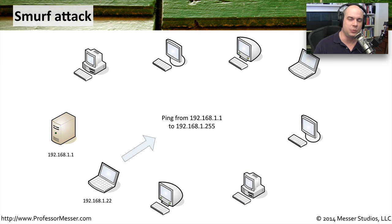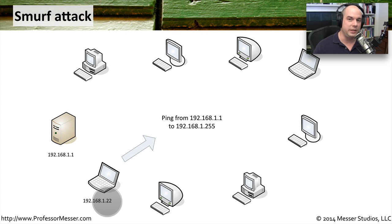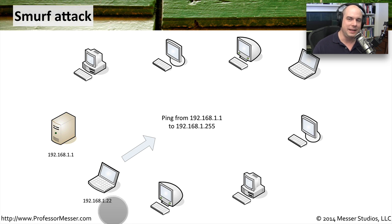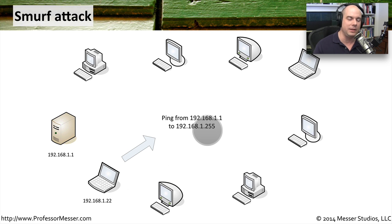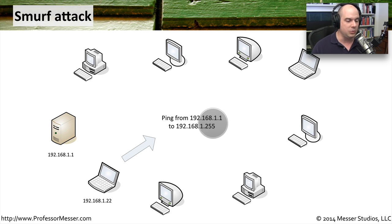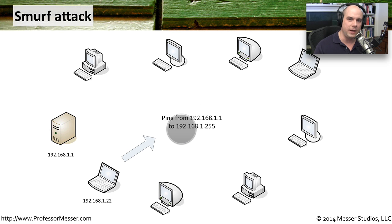One of the very first denial of service attacks was called a Smurf attack, and what was nice about it is you could get a lot of bang for your buck. You would be a station on the network — say 192.168.1.22 on a laptop — and you'd like to take down a server at 192.168.1.1. One machine taking down a big beefy server would be very difficult, so the key to a Smurf attack is involving everybody else on the network. You send a ping — an ICMP echo request — and spoof the from address. Even though you're 1.22, you send the packet out claiming you're 192.168.1.1, pretending to be the server.